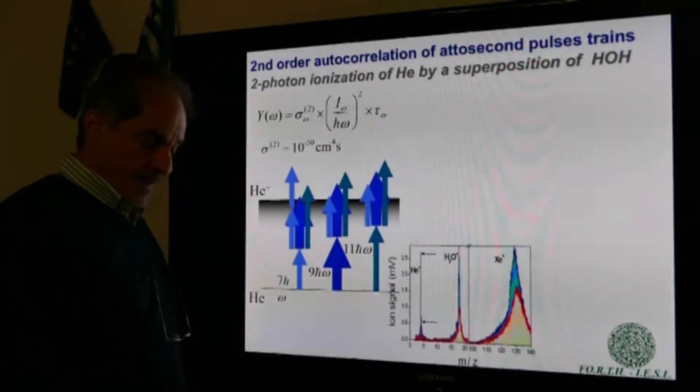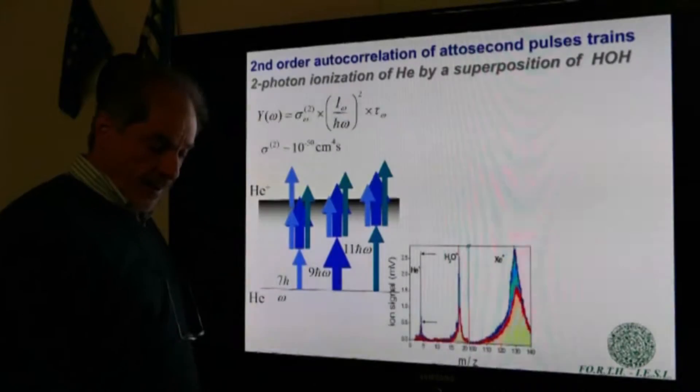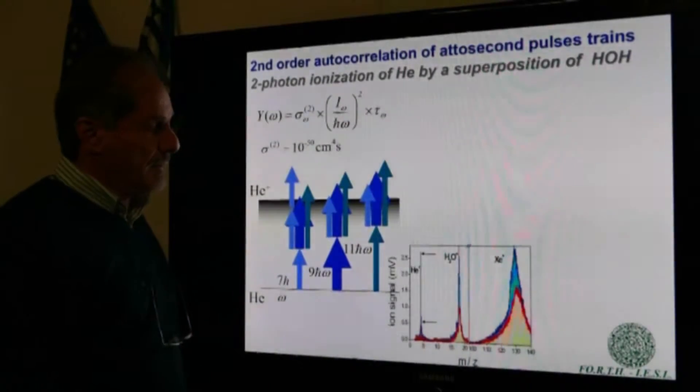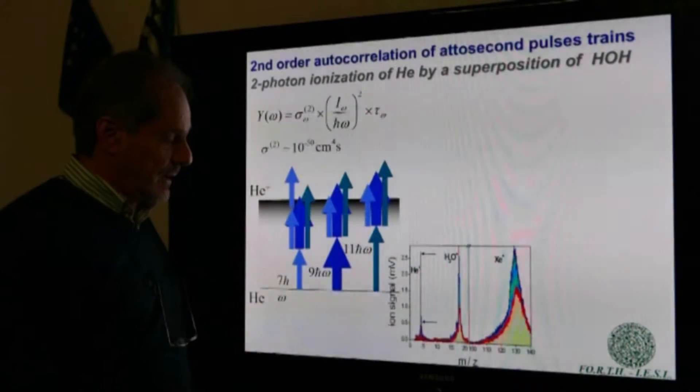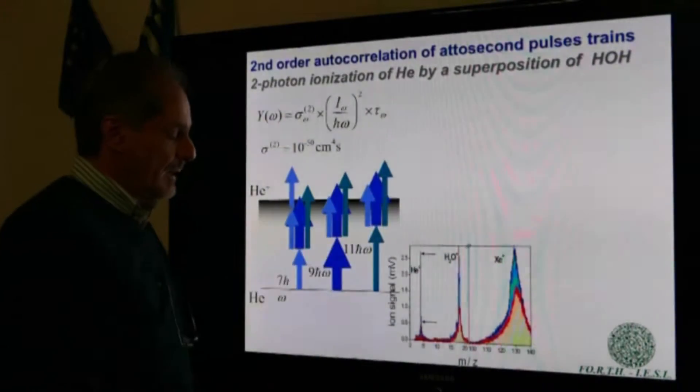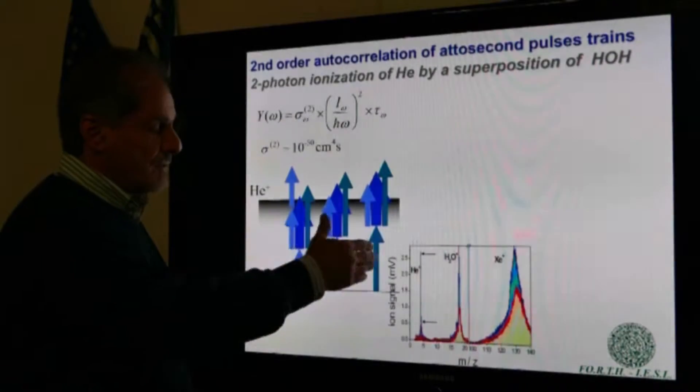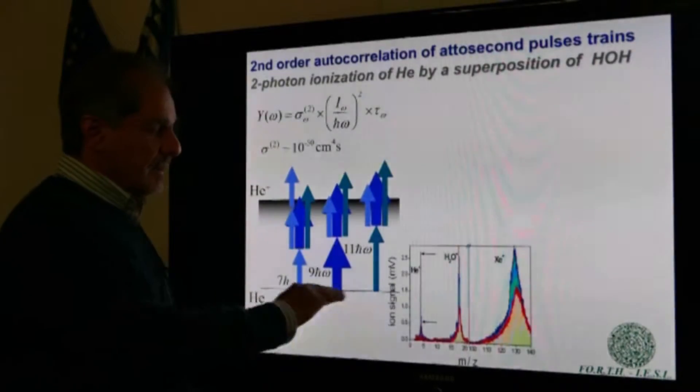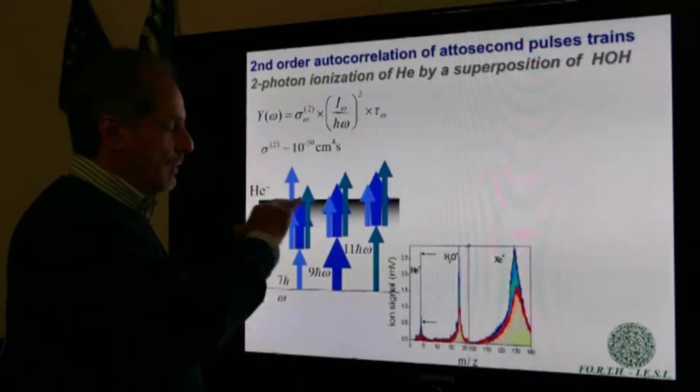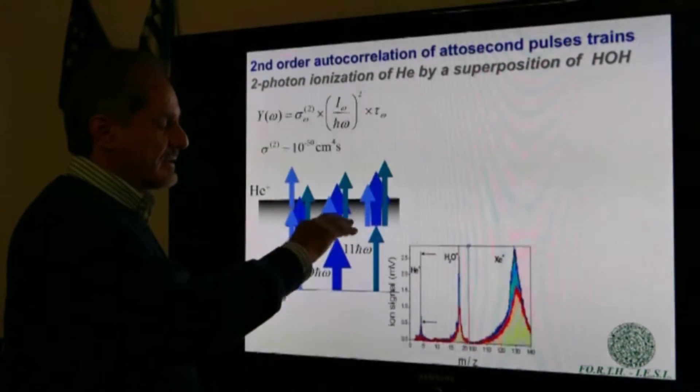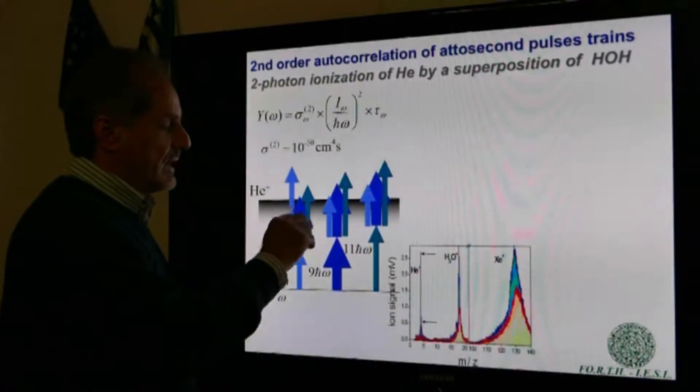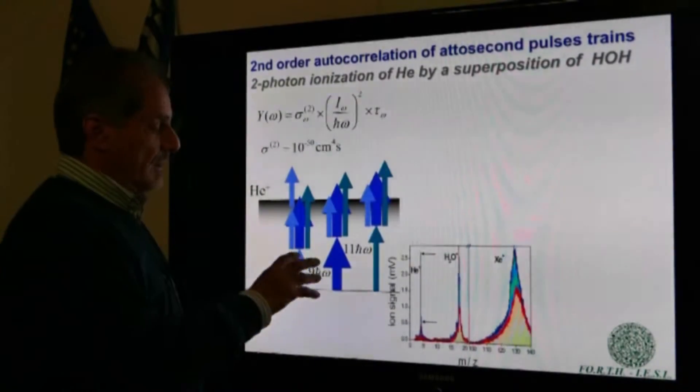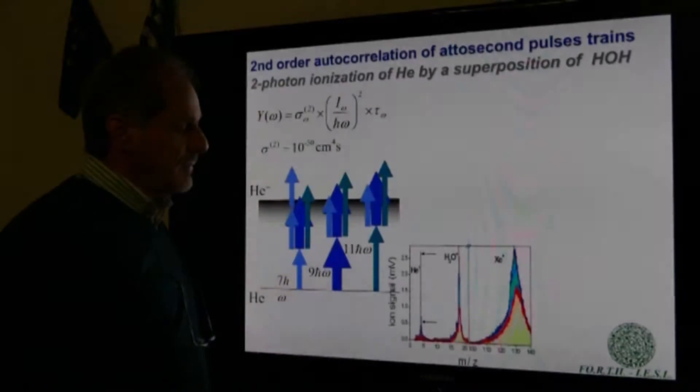Using high-intensity harmonic generation sources, we have been able to demonstrate two-photon ionization of helium by a sequence of harmonics - 7th, 9th, and 11th harmonic. Single-photon absorption is below the two-photon ionization threshold, and then the excited atom in the virtual state absorbs any of the other harmonics and ionizes. So we have two-photon ionization of helium.